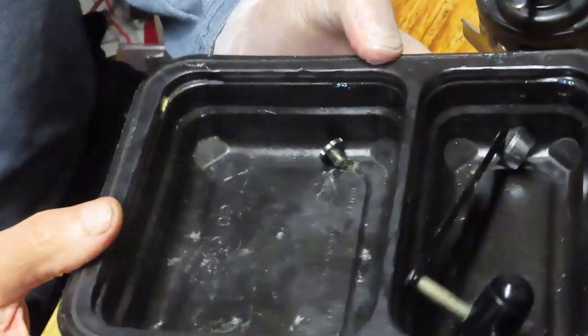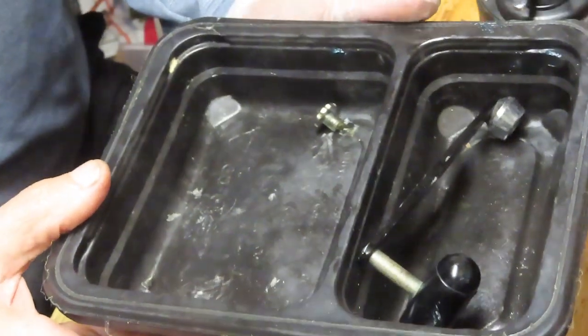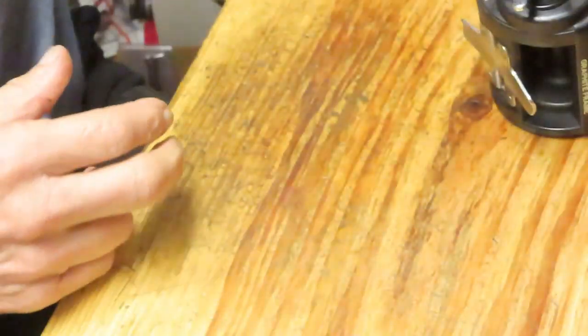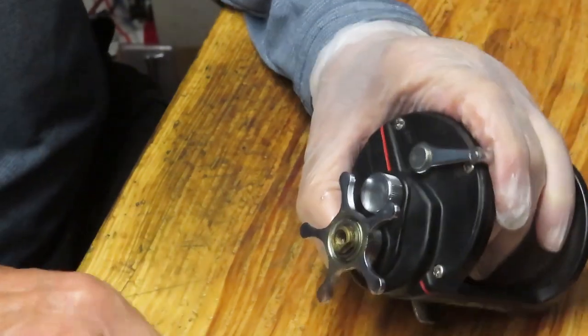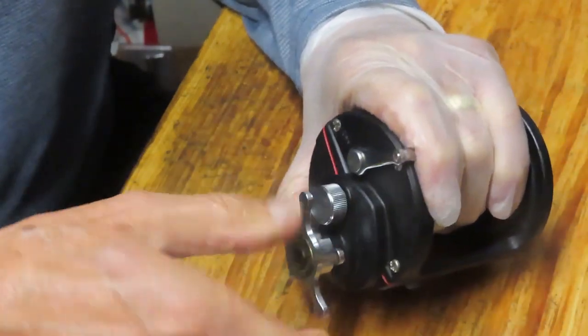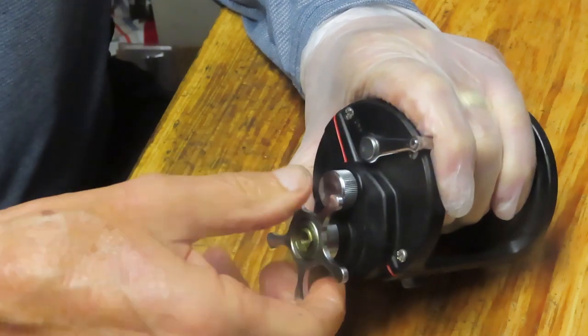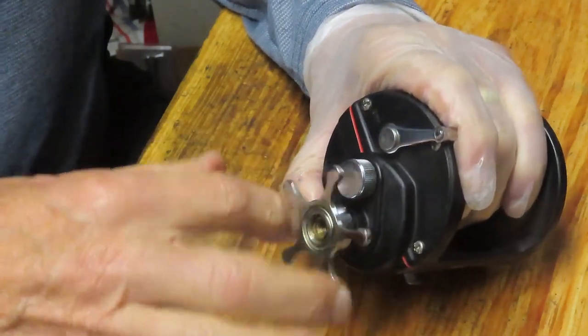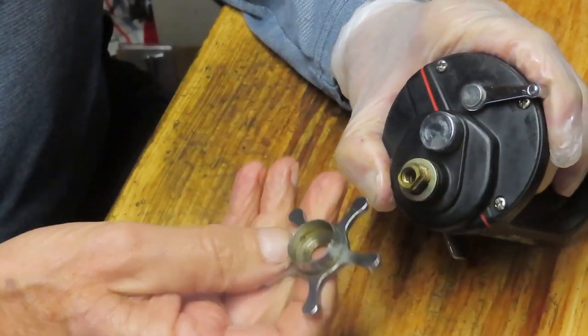When I take my pieces and parts off, I put them into a parts tray. Today I'm using the bottom of a fast food container. I take all the pieces and parts off, put them in a parts tray so that I can keep the parts in one place, so I know where they are when it comes time to reinstall.